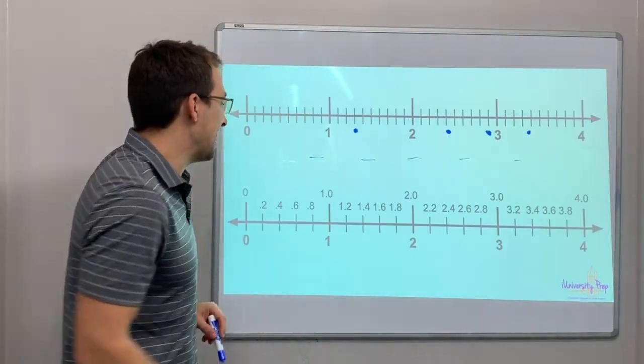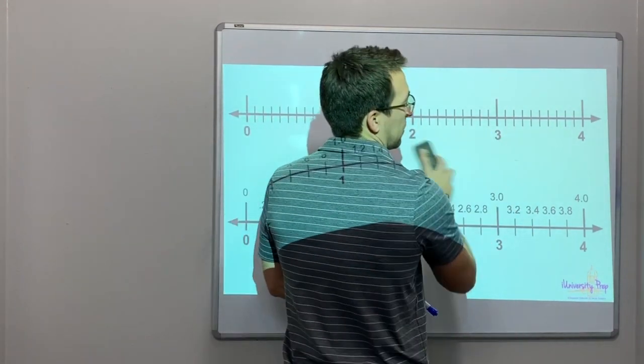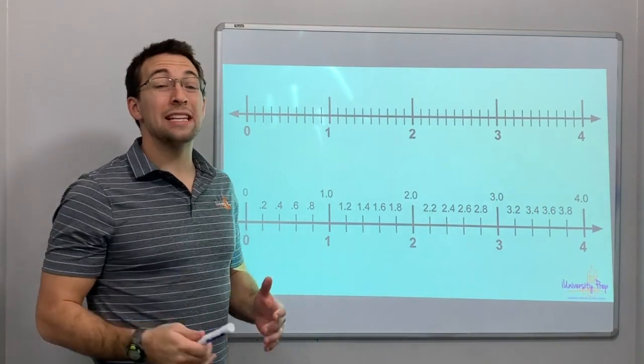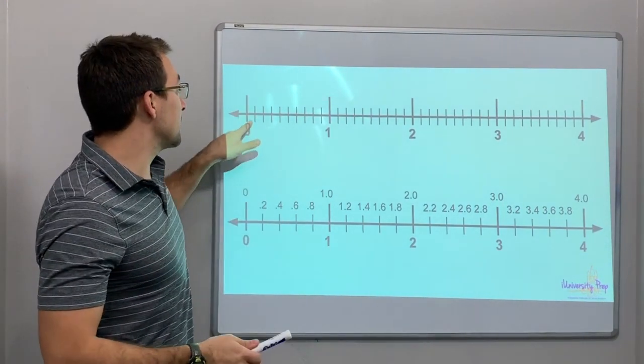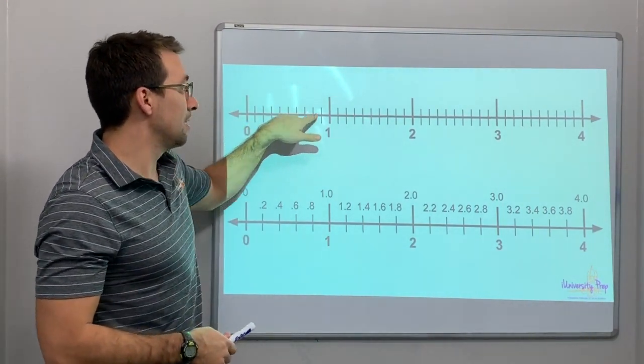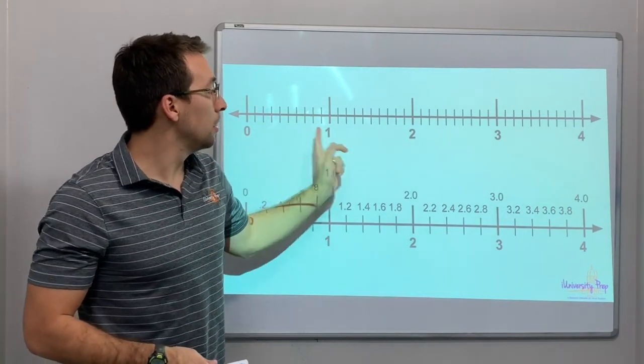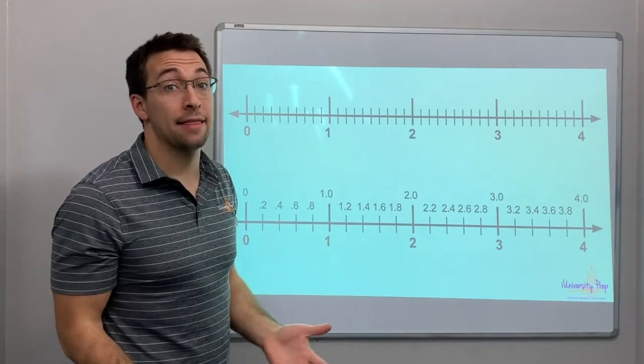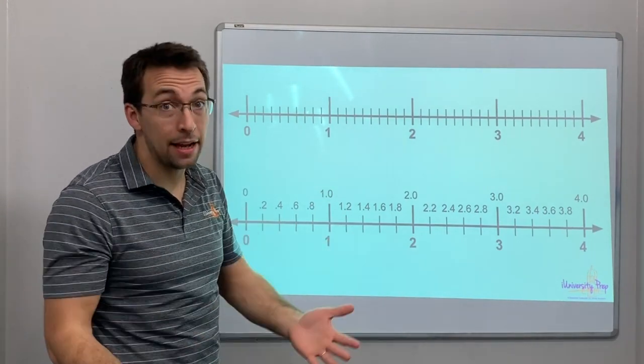And then last, last page of this video, just showing you again, a number line broken into tenths. Because there's 10 spaces between each whole number. If there's 10 spaces between each whole number, you're dealing with tenths. Because 10.